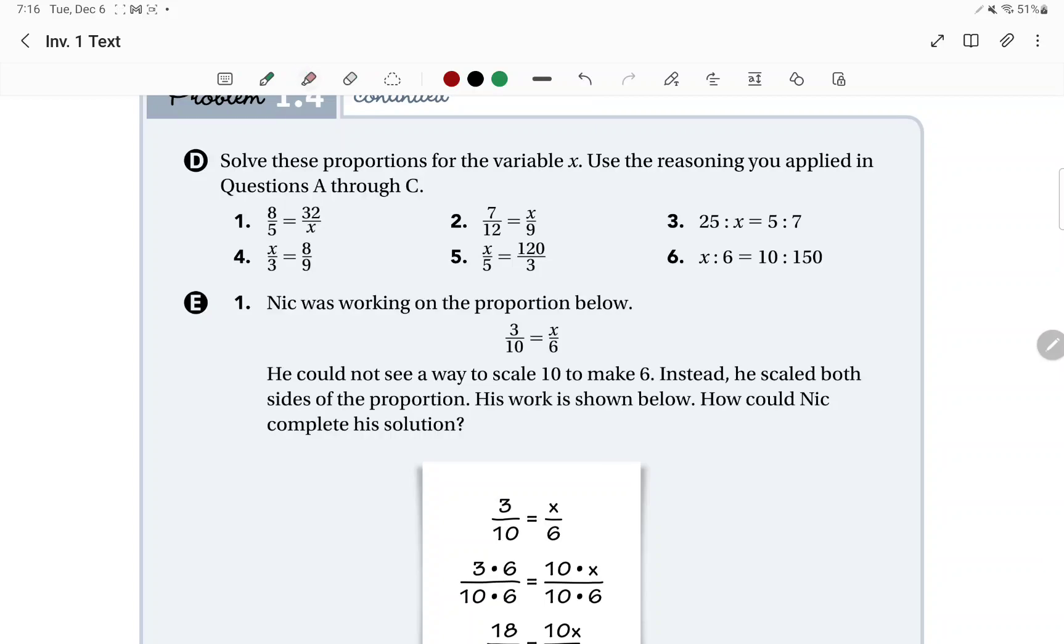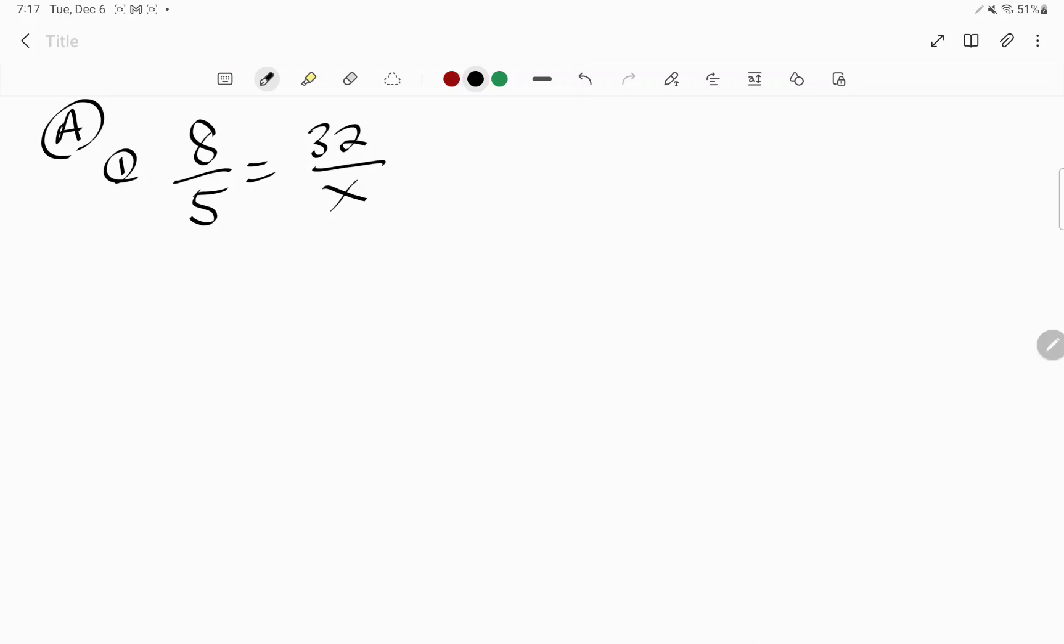First thing I want you to do is I want you to rewrite each proportion in your notes. So in number one, you would rewrite this: 8 over 5 is equal to 32 over x. You're going to rewrite them all and then you're going to go ahead and cross multiply. So 8 times x is equal to 5 times 32. And remember to figure out what x is, you have to ask the opposite question. Instead of 8 times what number will give me 5 times 32, 5 times 32 divided by 8 will give me what number? That's the opposite question.